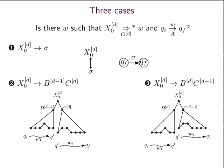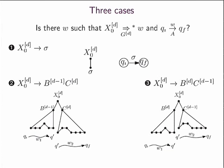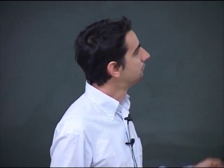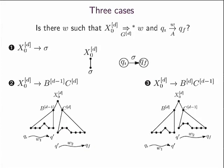How can I solve this problem? I'm starting from the X0 variable. If there is a production that rewrites this variable into sigma, and from the initial state in the automaton by reading sigma I end up in the final state, then I'm done — the word is just sigma. That's the base case. For the inductive case, if your variable rewrites to B_{d-1} and C_d, you can ask the problem twice: find some intermediate state q' such that a derivation of B_{d-1} goes from the initial state to q', and then a derivation of C_d goes from q' to the final state.